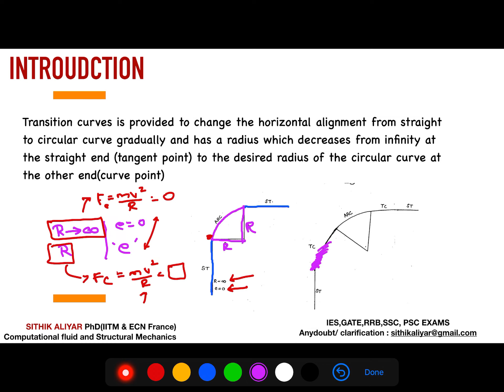The transition curve sits between the straight road and the horizontal curve so that you can gradually introduce everything — gradual reduction of radius, gradual introduction of super-elevation, and gradual introduction of extra widening. Our objective is to find the length of the transition curve required so that we can gradually introduce everything.